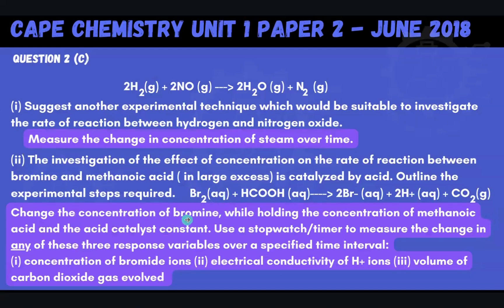You could also keep the bromine concentration constant and change the methanoic acid concentration while keeping the acid catalyst constant — that way you determine the order with respect to methanoic acid. Remember, you can only change the concentration of one reactant at a time, because that way you know exactly how that reactant affects the rate. With that, we've come to the end of this question. If you've made it this far, give this video a like, subscribe to the channel, hit the notification bell, share this video with your friends, and stick around — we have a lot more content coming your way. Thanks for watching, and we'll see you in the next video.